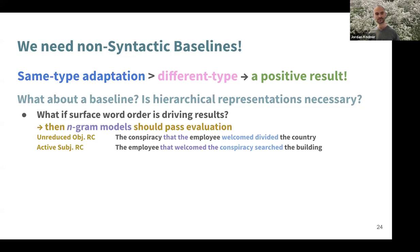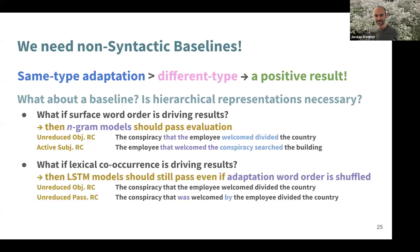We considered two baselines. First, maybe surface word order is driving the results, in which case an n-gram model should do well. In the unreduced object-relative clauses, you get the bigram 'that-the,' which you don't get in active subject-relative clauses — and there are two verbs in a row in one but not the other. The second idea: what if it's lexical co-occurrence rather than word order? If we shuffle the words in adaptation sentences, we should still see the effect since we're destroying the syntax. For example, in unreduced passive-relative clauses, we always see 'was' or 'were' and 'by,' which don't appear in active relative clauses.